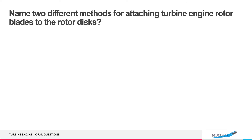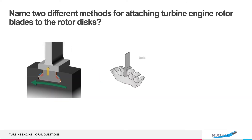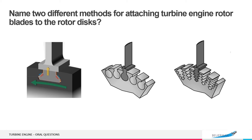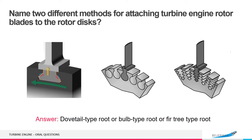Name two different methods for attaching turbine engine rotor blades to the rotor discs. Dovetail type root, bulb type root, or fir tree type root.